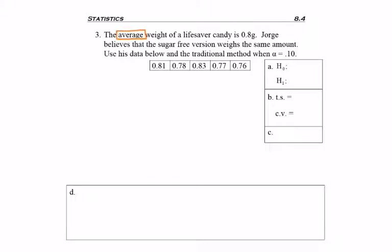Okay, so first thing, we're given that this is the average weight and George believes. So we're talking about an average. What is George claiming? That the weight is the same. So we have equals. This means mu equals 0.8 is the claim.